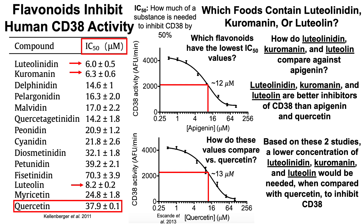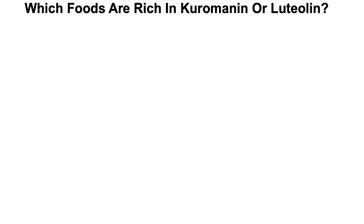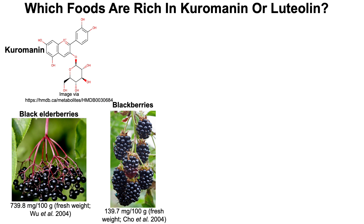Which foods contain these three flavonoids? Starting with curomanin and luteolin, since they may be more easily obtained through commercially available foods. Curomanin is most abundant in black elderberries at about 740 milligrams per 100 grams of fresh weight, and is also found in relatively high amounts in blackberries — 140 milligrams per 100 grams of fresh blackberries. Does curomanin's inhibition of CD38 actually lead to higher NAD levels? As far as I can find, there's only one study that has looked at that.